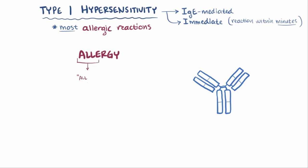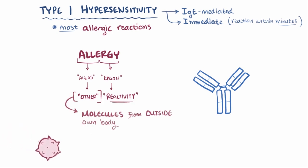Allergy comes from the Greek allos, which roughly means other, and ergon, which means reactivity. Essentially, allergies are reactions to molecules from outside your own body that most people don't react to.